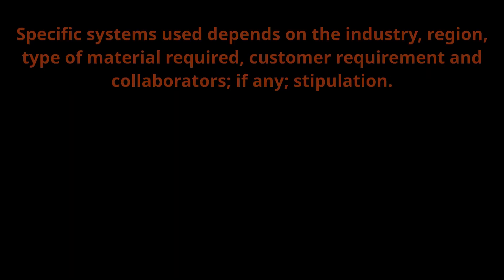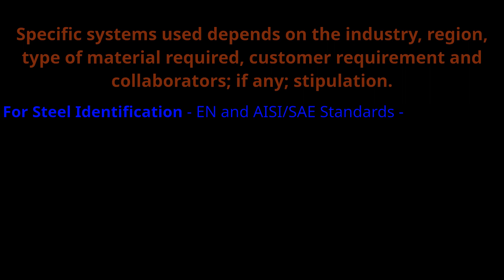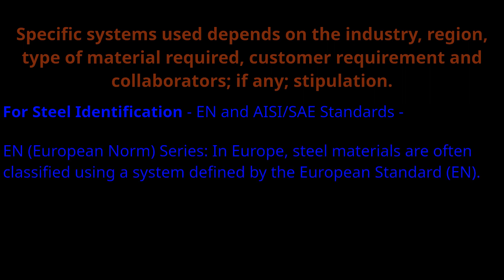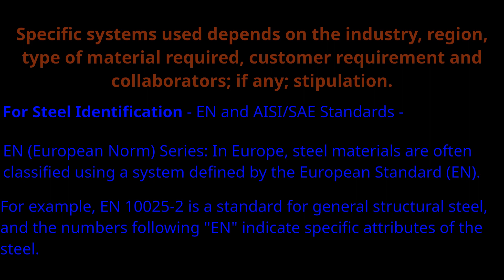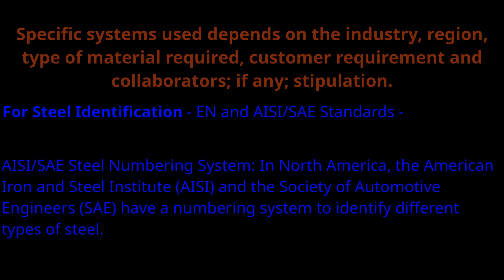For steel identification, either EN or AISI/SAE standards should be used. EN means European Norm — as the name suggests, it is used in Europe and defined by European standards. For example, EN 10025-2 is a standard for general structural steel. The AISI/SAE steel numbering system, used in North America, is formulated by the American Iron and Steel Institute and SAE — Society of Automotive Engineers.